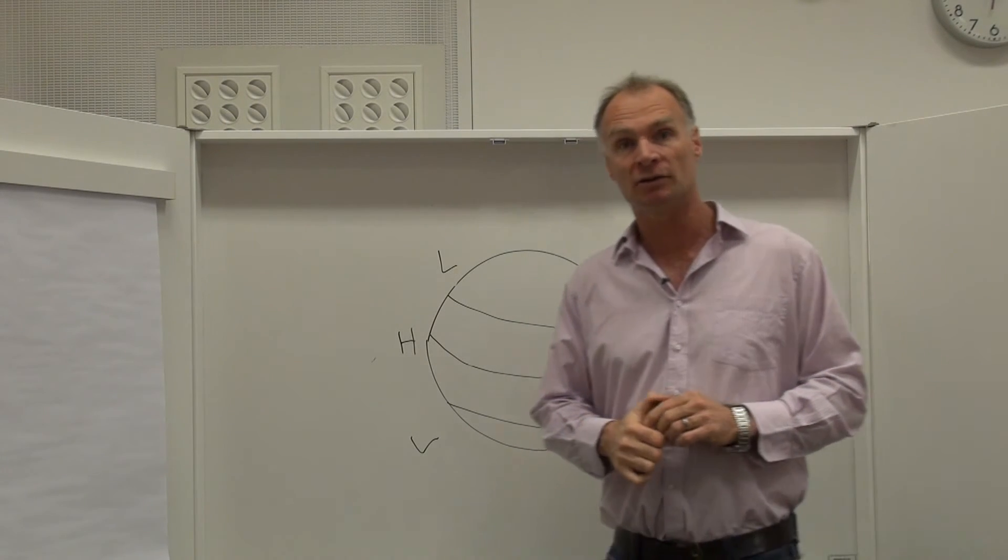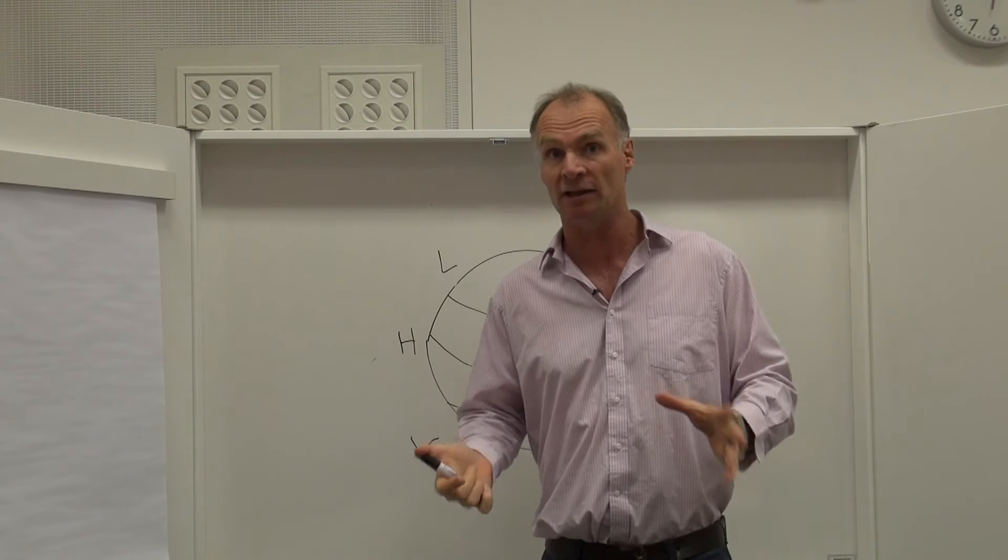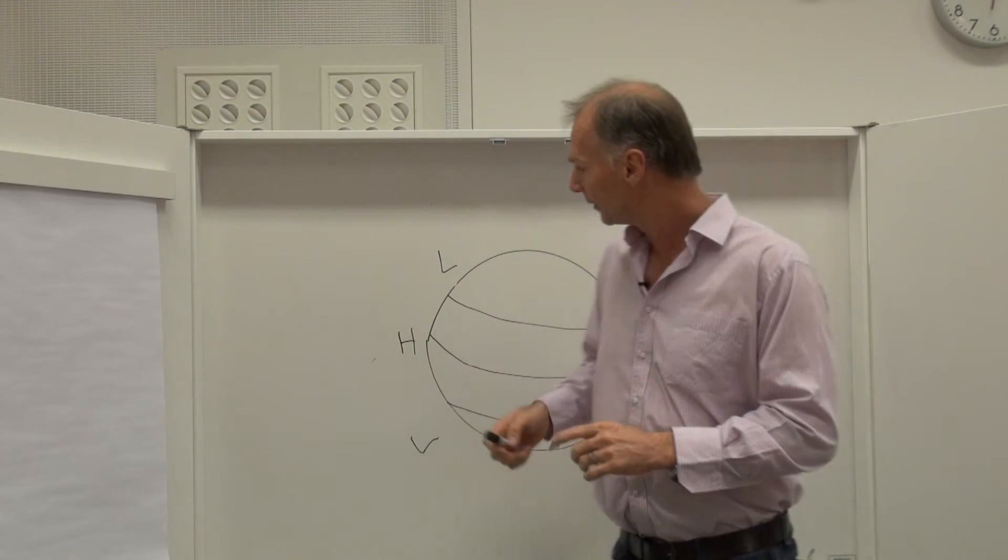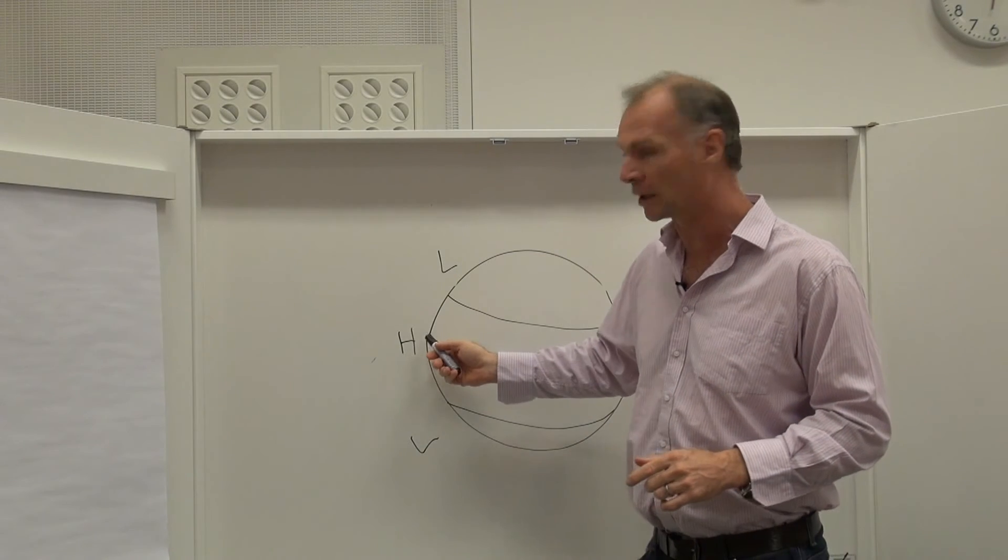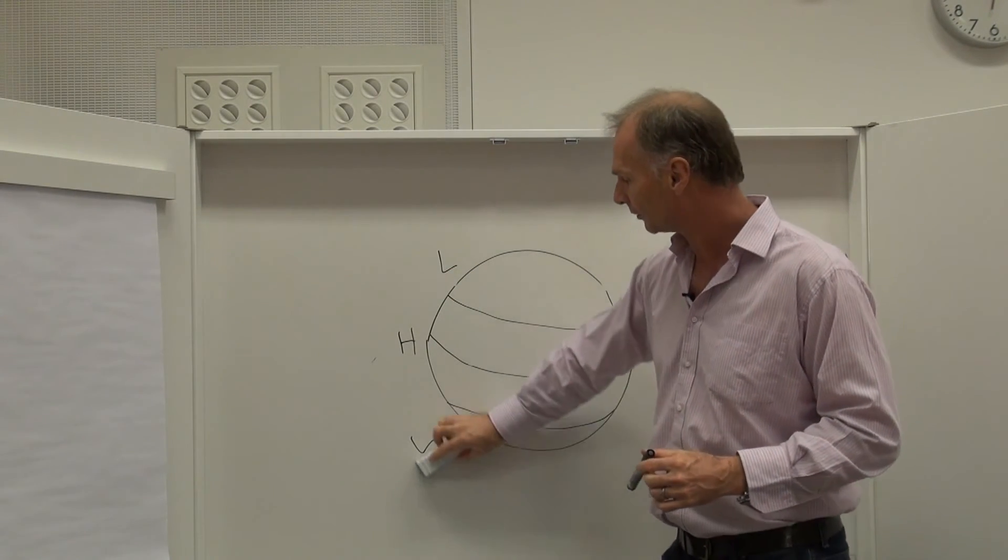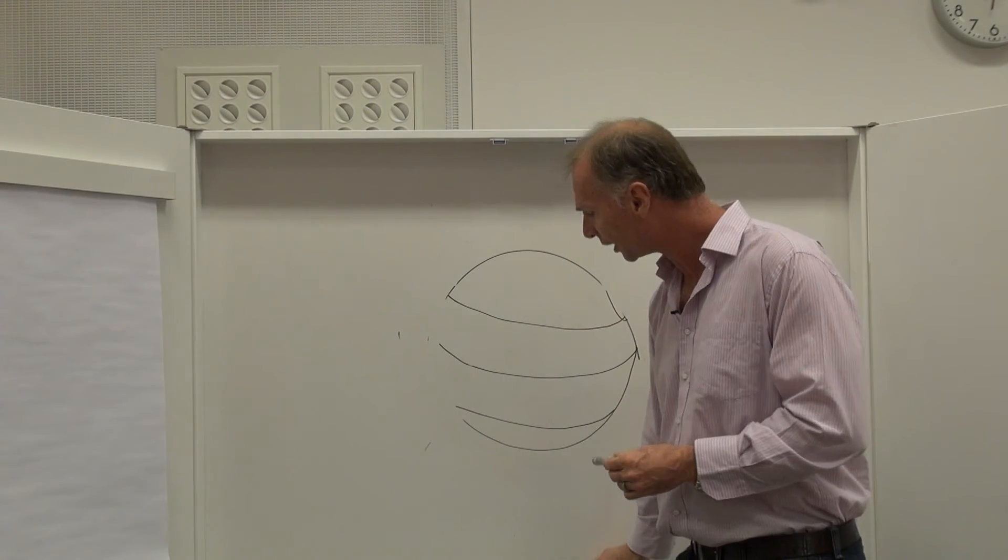We also found that when looking at functional group richness, that is the different functions that the fish take up, that it was higher in the tropics as well and lower in the colder latitudes. But the global study found a great surprise.